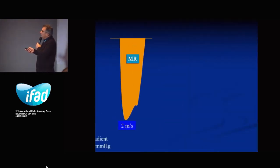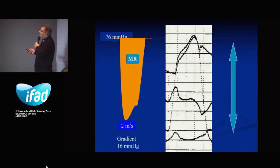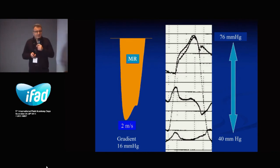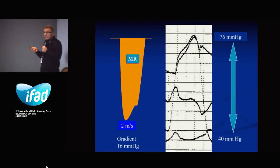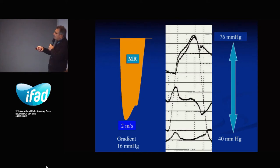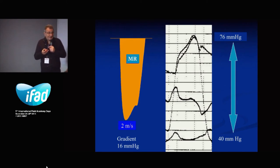Consider a really severe clinical situation: a patient in cardiogenic shock, almost dying, with a systolic pressure of 75-76 mmHg and a wedge pressure (PAOP) of 40 mmHg — which is the pressure in the left atrium. The maximum velocity of mitral regurgitation reflects the pressure gradient between the left atrium and the left ventricle during systole. With a PAOP of 40 mmHg and a gradient of 36 mmHg, do you agree?